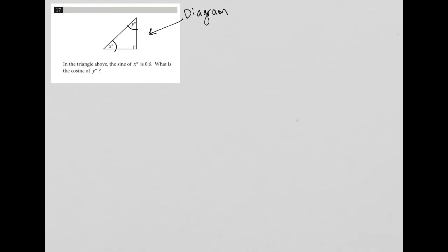So the question says in the triangle above the sine of x, so I'm gonna write that down. Sine x equals 0.6.